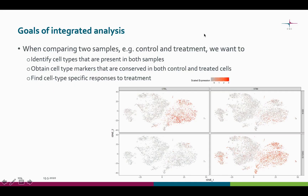Often when you are comparing two samples, for example treated and non-treated samples, you want to again identify the cell types present in both samples and identify the conserved cell type markers, meaning genes that are expressed in a certain cell type in both of the samples.